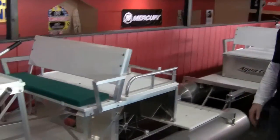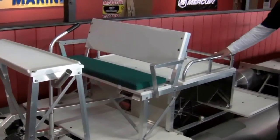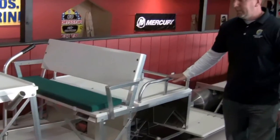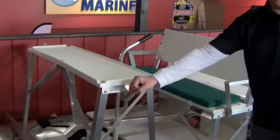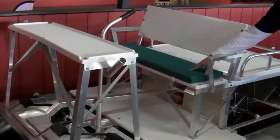This particular model here is the AquaCycle Plus. It is a two-person paddle boat. We've got it equipped with the optional front table, the rod holders, and a cushion.